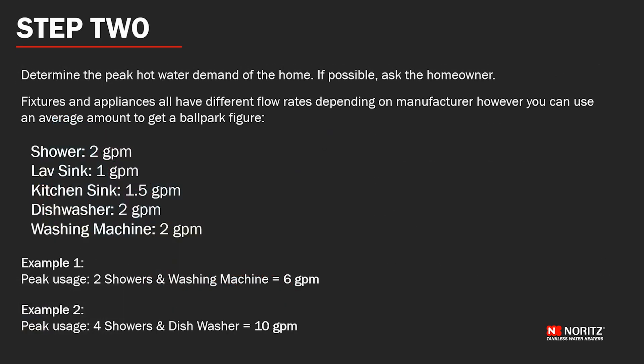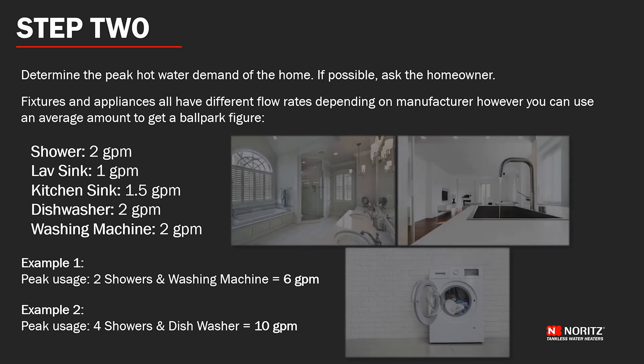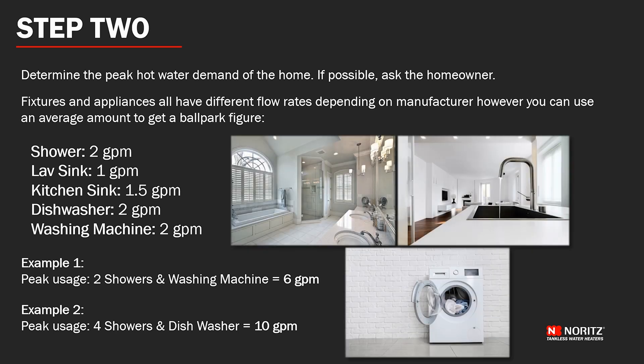For step two, you are going to determine the peak hot water demand of the home. If possible, ask the homeowner how many hot water fixtures they typically use at the same time. Fixtures and appliances have different flow rates depending on the manufacturer. However, you can use an average amount like the ones shown to get a ballpark figure. If in doubt, check the fixture itself or contact the manufacturer.